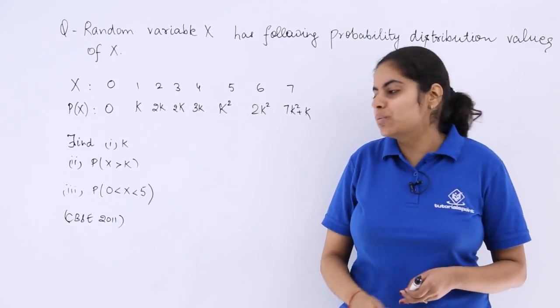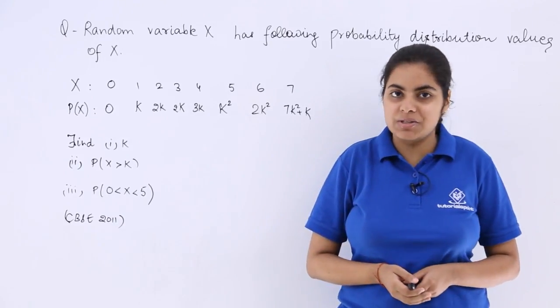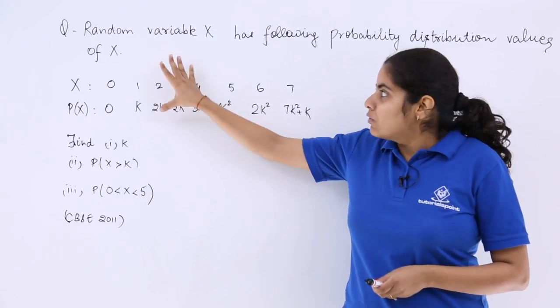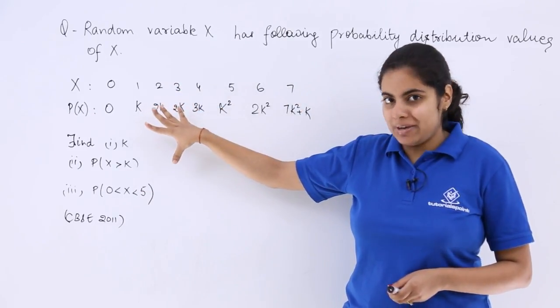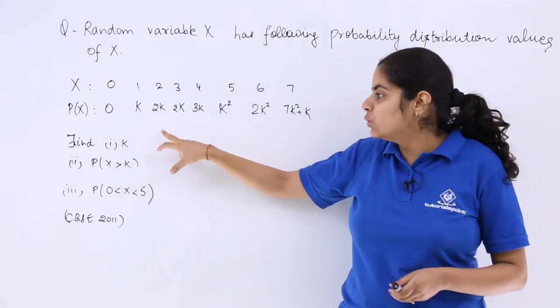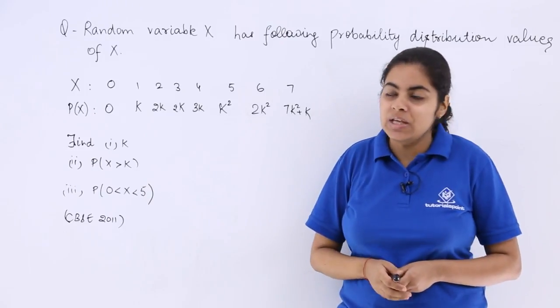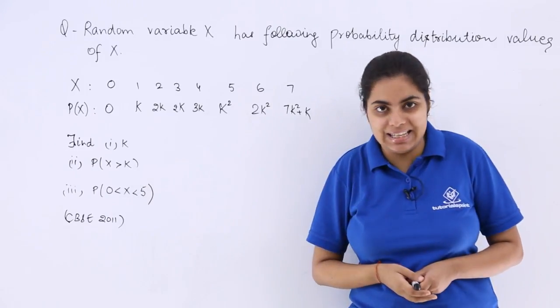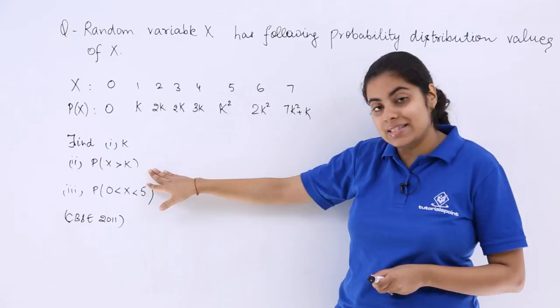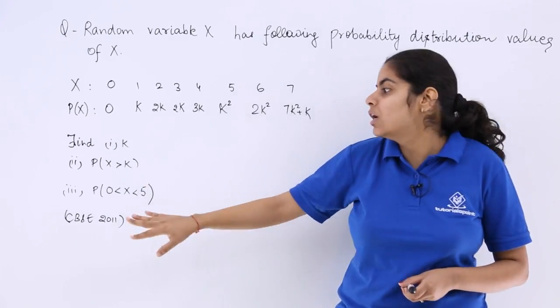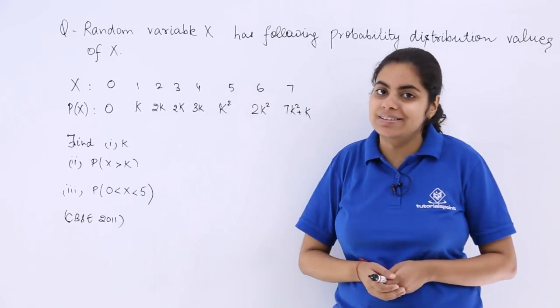Now let's see this first problem. It was asked in the CBSE examination 2012. It says if the given random distribution of X is there as the probability distribution, you have to find all these three parts. So the first part asks you to find k, the second asks you to find P(X>k), and the third is here present.